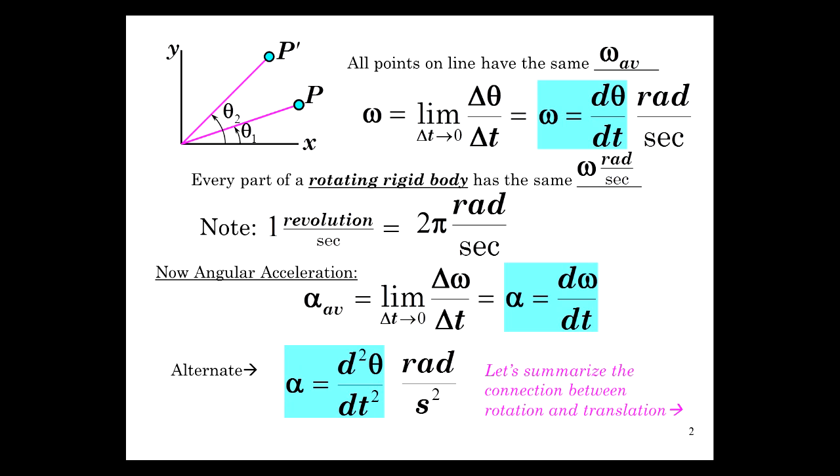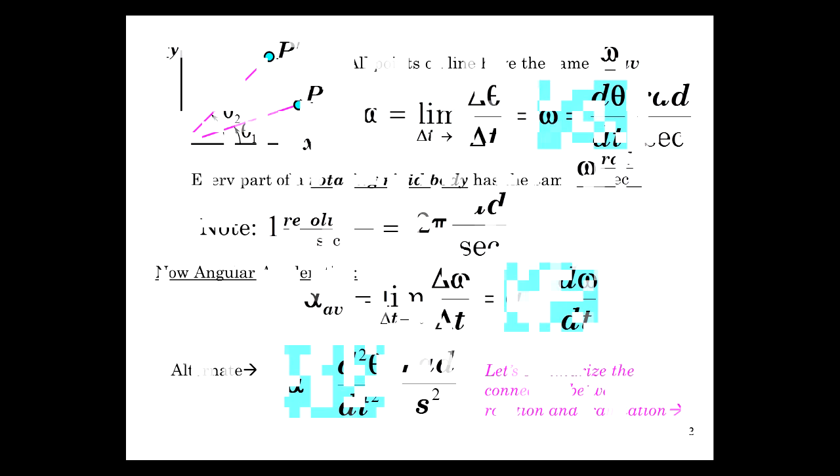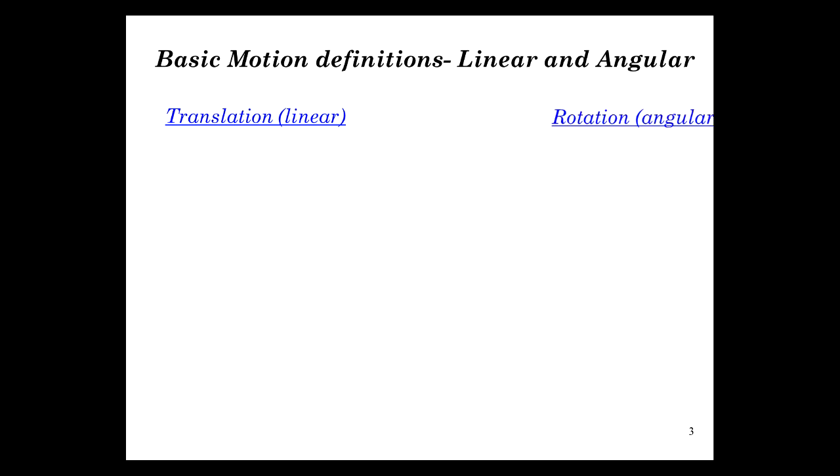So let's now summarize the connection between rotation and translation. So then here are the basic definitions of motion, linear and angular. So linear is also translational, angular is rotational, and the connection between them. So we have x in translation, or s, and in rotation we have theta. What's the connection? Theta is s over r, or s is equal to r theta.